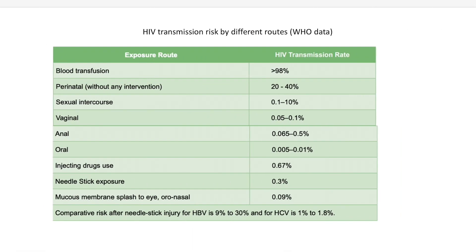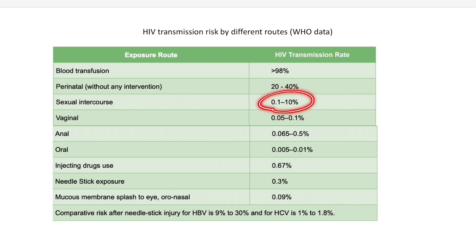With this basic knowledge, let's get to the statistics — what is the risk of HIV transmission by different routes. This is the latest WHO data. The rate is very high, almost more than 98 percent with blood transfusion. It is around 20 to 40 percent perinatal if there is no intervention like ART prophylaxis. Sexual intercourse, depending upon the route — whether vaginal, anal, or oral — weighs around 0.1 to 10 percent.